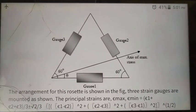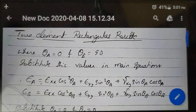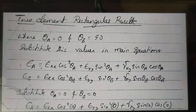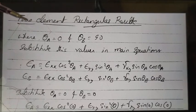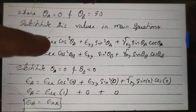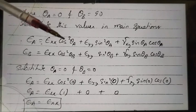These three types are the main strain gauge arrangements. Now we move on to the calculation part, starting with the two-element rectangular rosette. The two-element rectangular rosette has theta_a equal to zero degrees for the first gauge and theta_b equal to 90 degrees for the second gauge. We use the main equation: epsilon_a equals epsilon_xx cos²(theta_a) plus epsilon_yy sin²(theta_a) plus gamma_xy sin(theta_a)cos(theta_a).